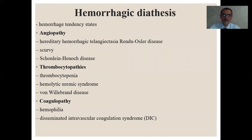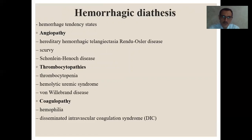Hemorrhagic diathesis means hemorrhage tendency states. It may occur during angiopathy — hereditary hemorrhagic telangiectasia, Rendu-Osler disease, scurvy, Anschon-Line, Henoch disease; in thrombocytopathies — thrombocytopenia, hemolytic uremic syndrome, von Willebrand disease; and during coagulopathy — hemorrhagic and disseminated intravascular coagulation syndrome, DIC syndrome.